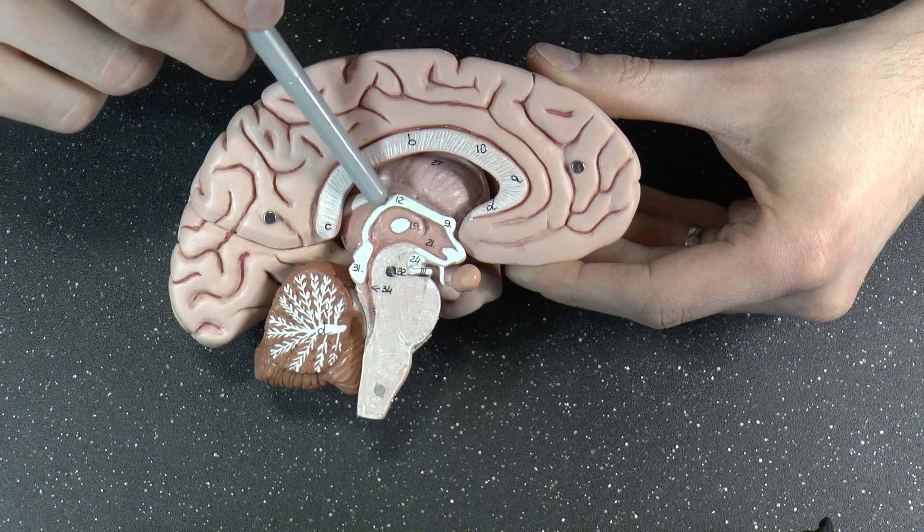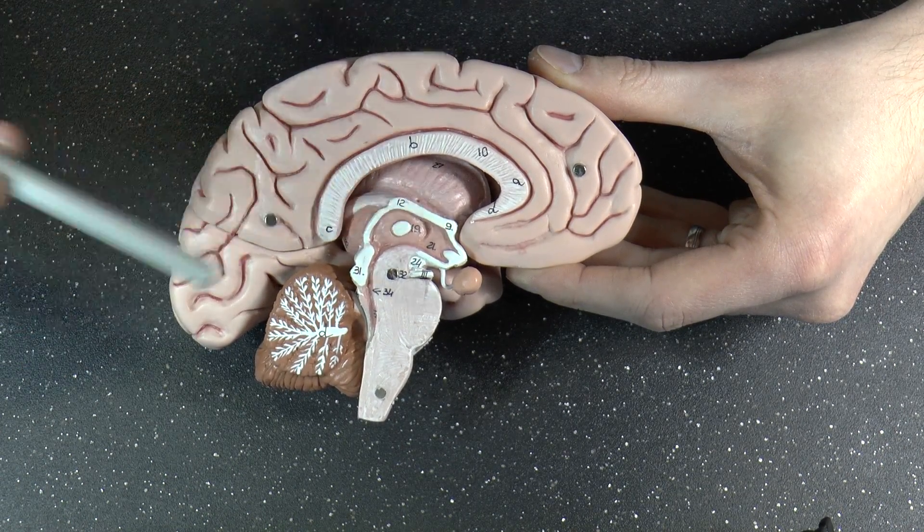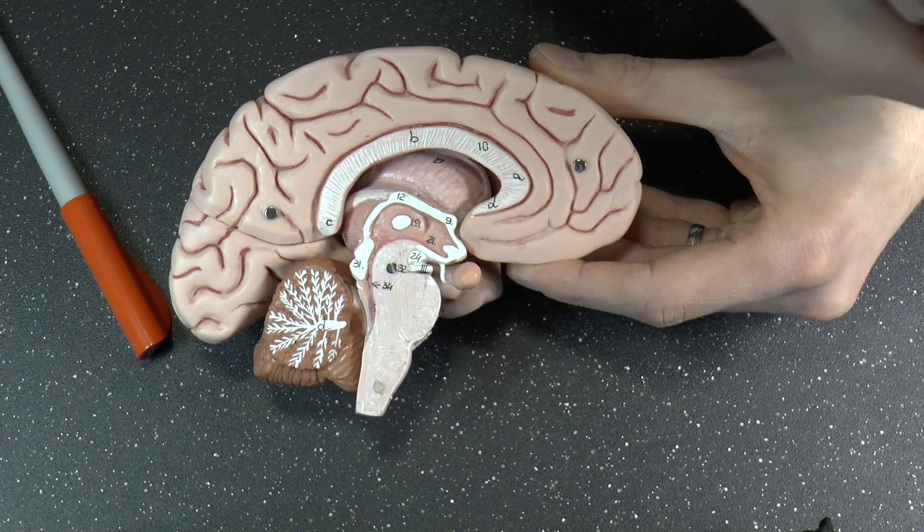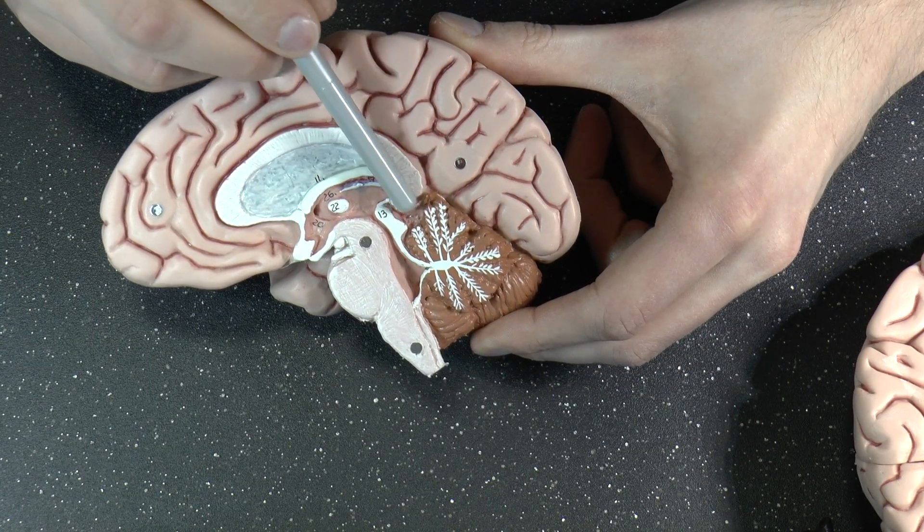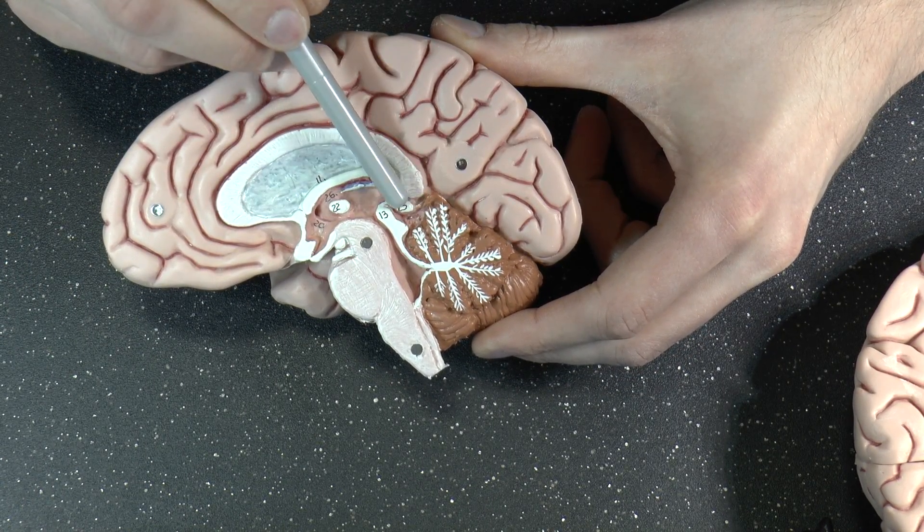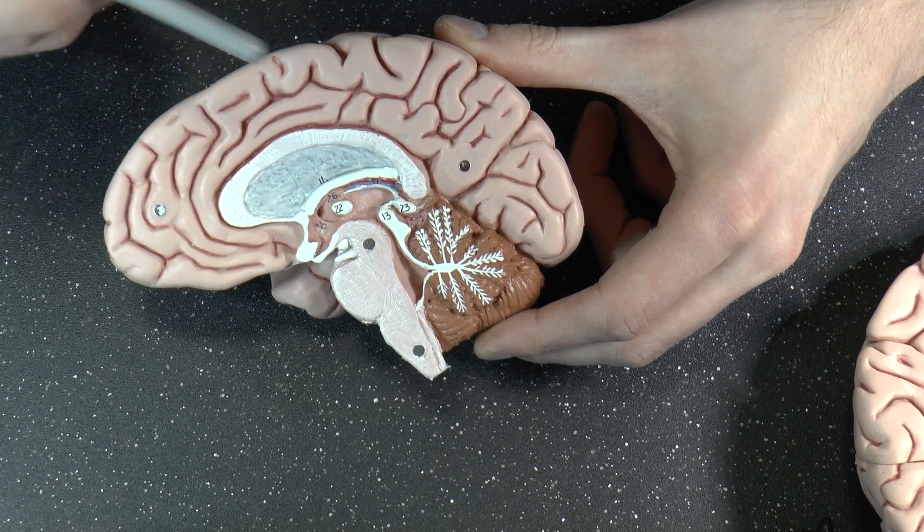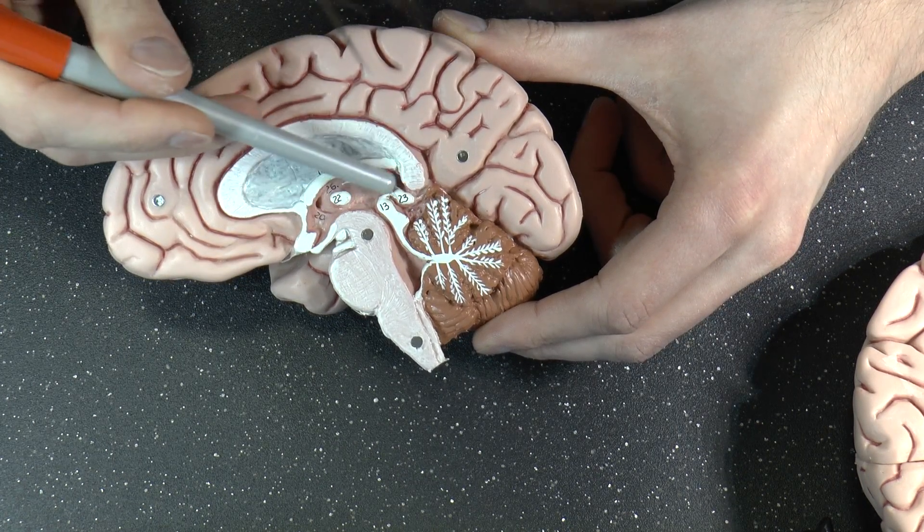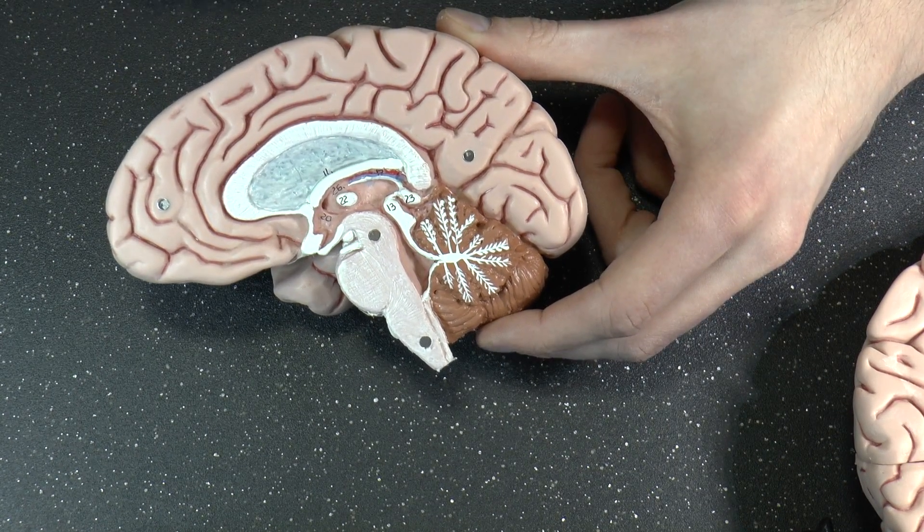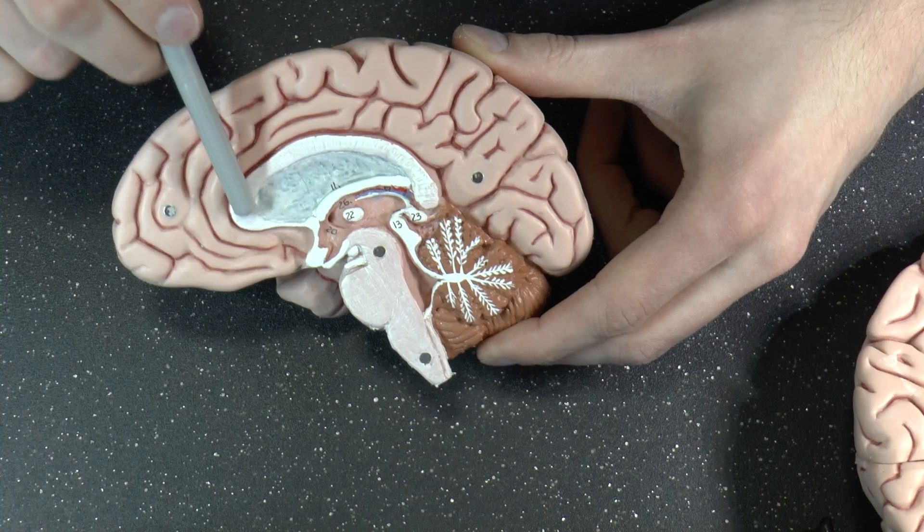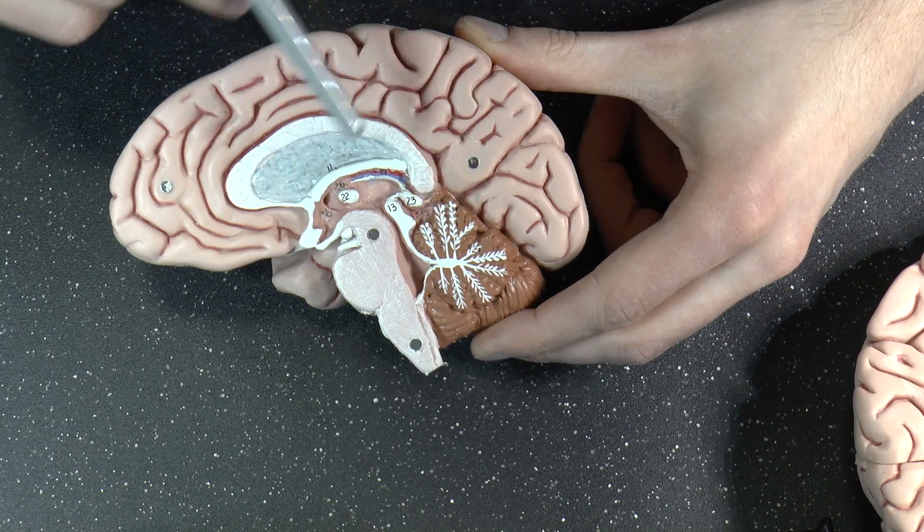And then you also have the habenular commissure. But for that, you kind of need to see the pineal gland, the gland spinalis, which is where Descartes said the immaterial soul interacted with the material body or brain. And then a little bit above that is the habenular commissure. But you can't really see that on this model. This model is not detailed enough. Anyway. Now you have it. Corpus callosum. Anterior commissure. Posterior commissure.